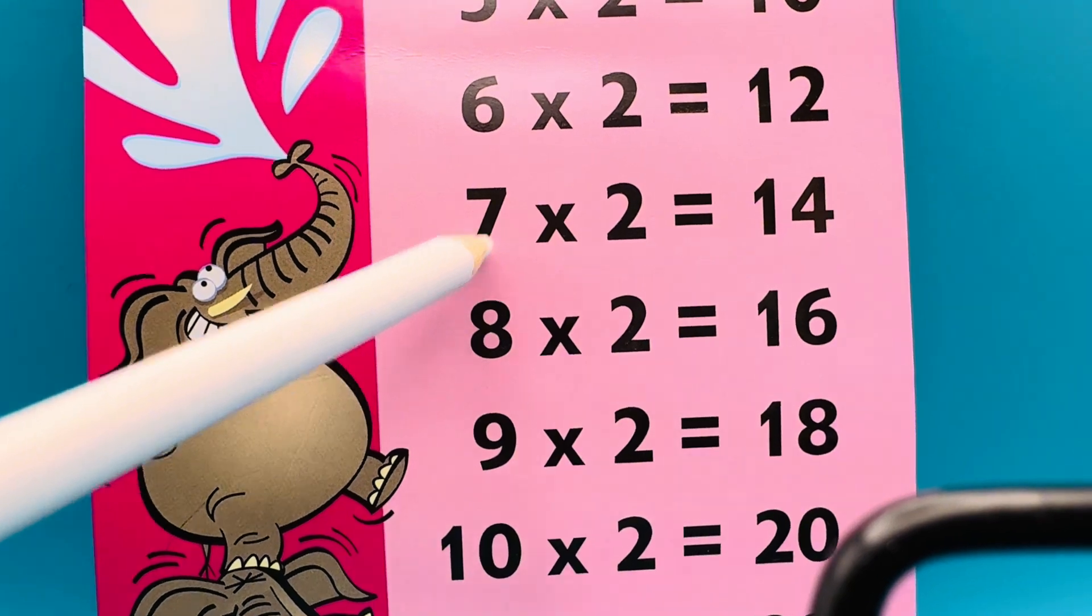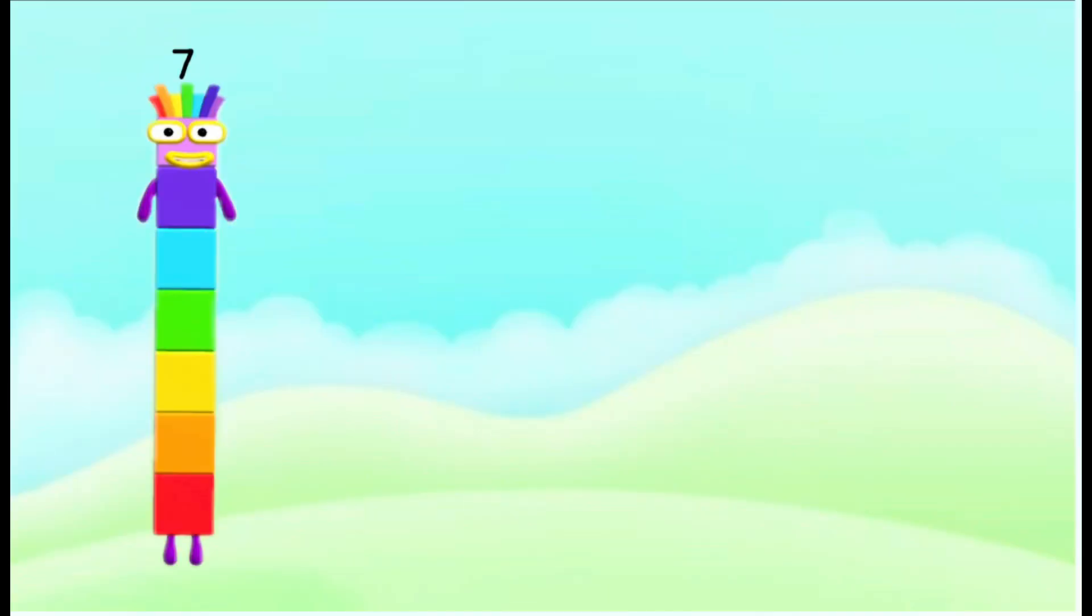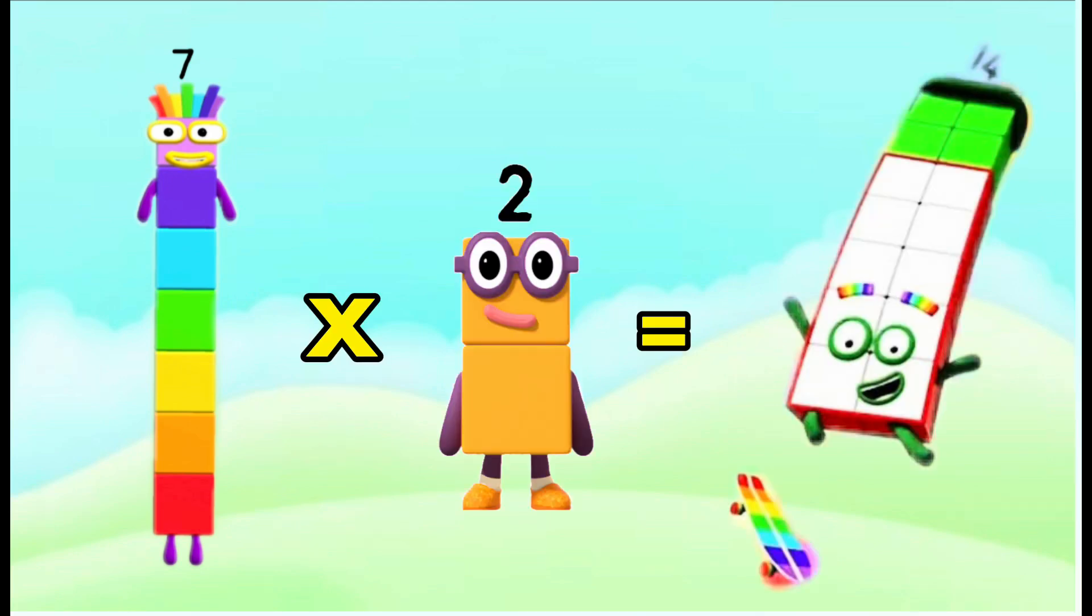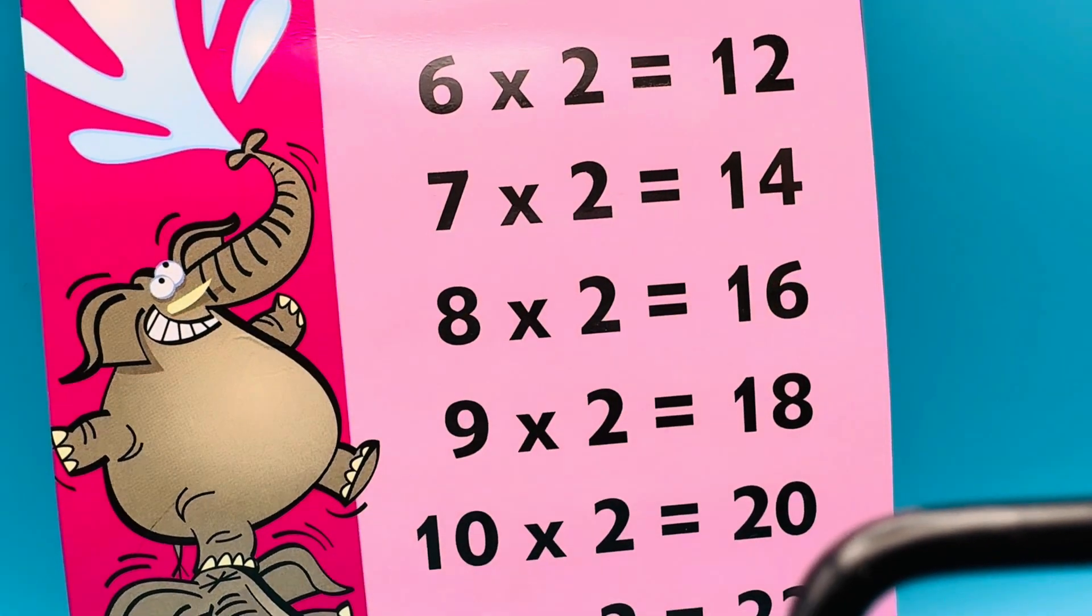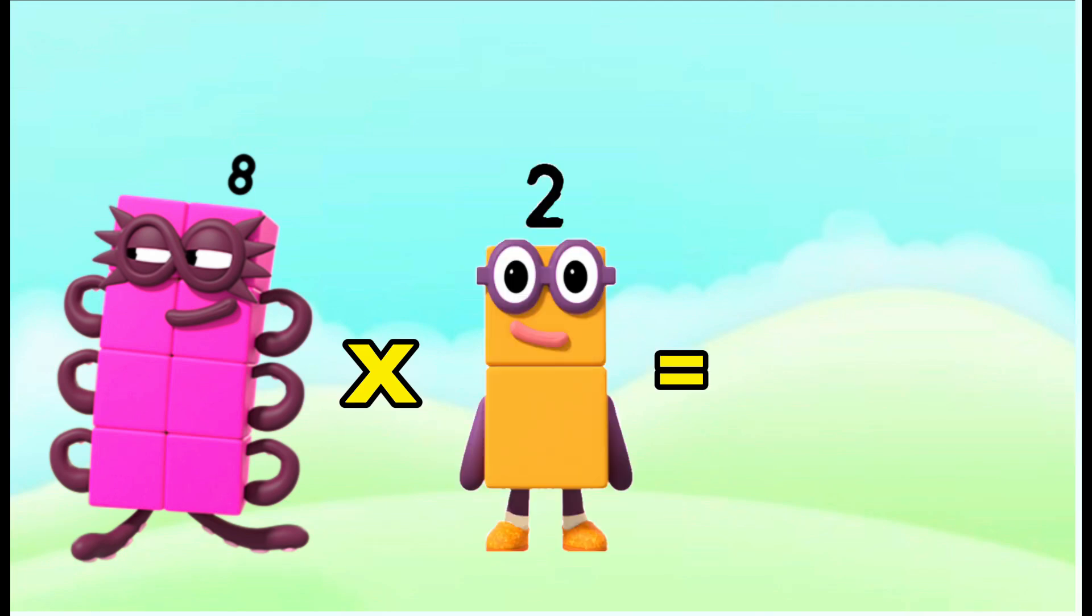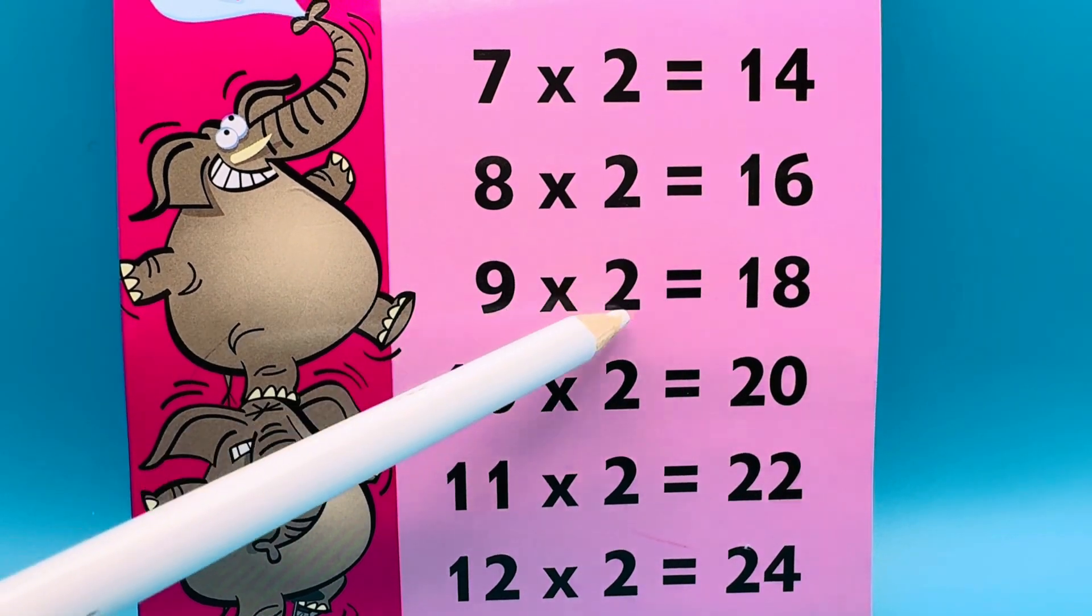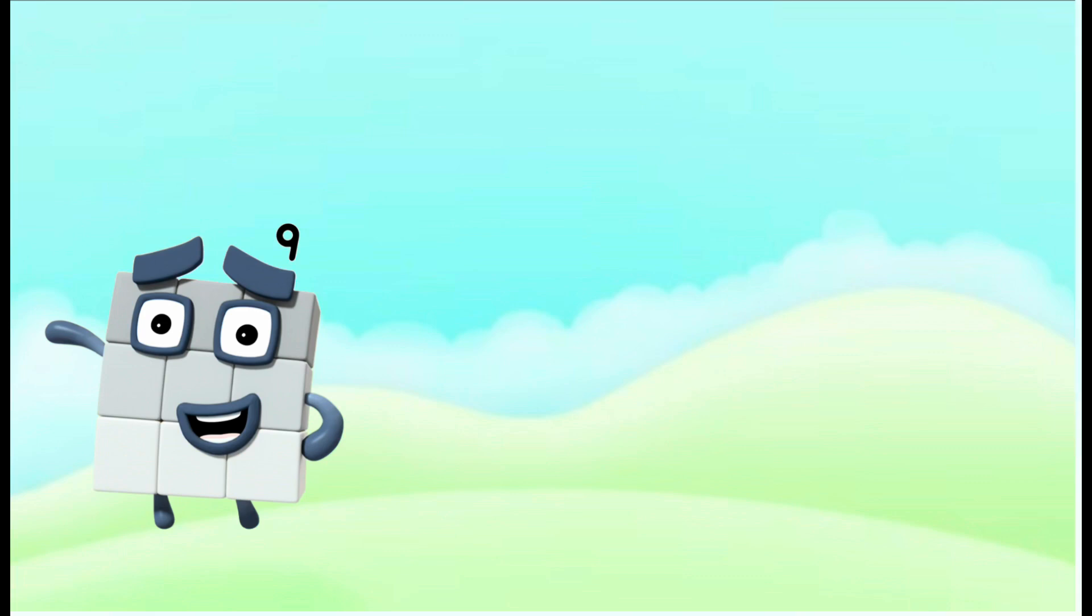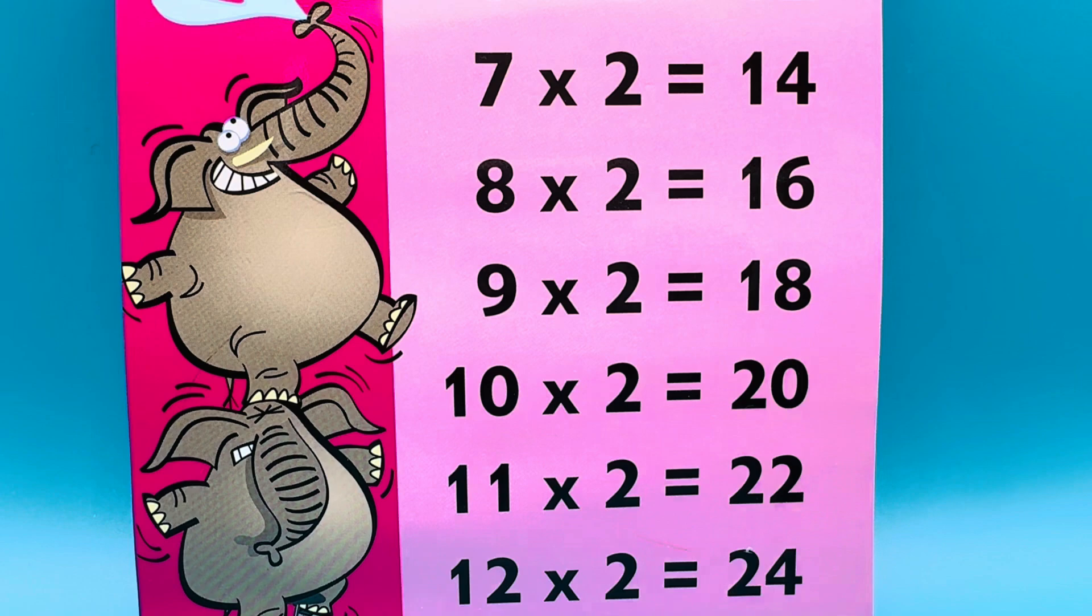Next is 7 times 2 equals 14. 7 times 2 equals 14. 8 times 2 equals 16. 8 times 2 equals 16. 9 times 2 equals 18. 9 times 2 equals 18.